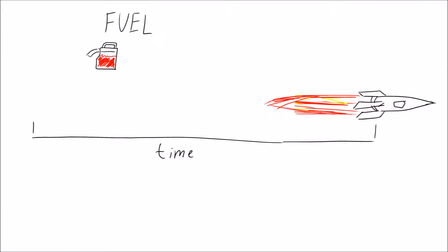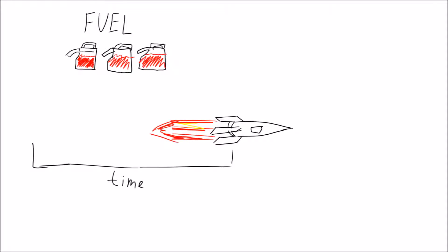A high specific impulse tells us a lot of force is exerted over a long period of time by using up less fuel. A low specific impulse tells us less force is exerted over a shorter period of time by using more fuel.